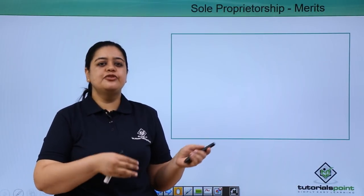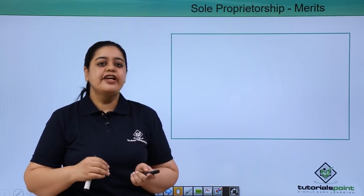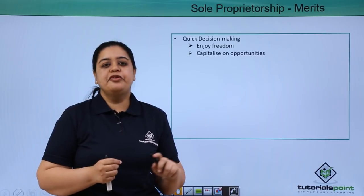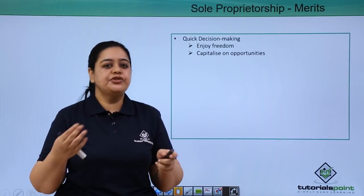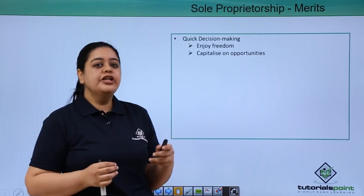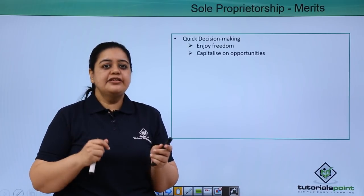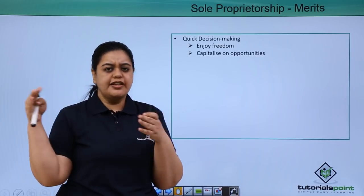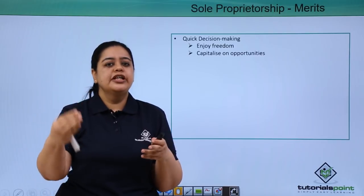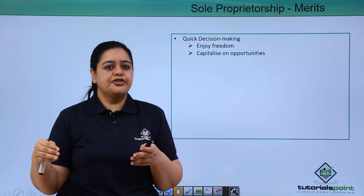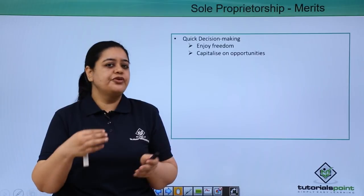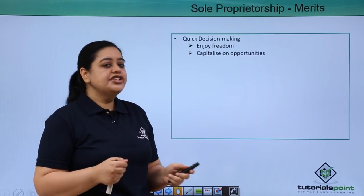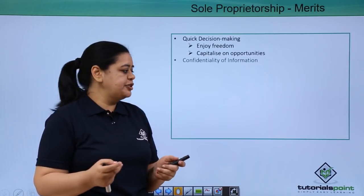Now let's discuss the merits of sole proprietorship — most are derived from the features. The first is quick decision making. As we discussed in features, the sole proprietor is the sole decision maker, so they can make decisions quickly. For example, if Rama gets a very lucrative business opportunity, she doesn't have to wait for approval or consult anyone else in control. She is the only person making the decision, so she can act quickly and capitalize on opportunities.